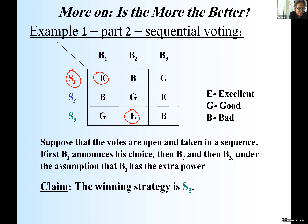If B3 selects S2, no majority. If he selects S2, no majority, and therefore the selection of S1 is going to be implemented — S1 is going to win, which is good for player three. If he selects S1, it's also S1 going to win.